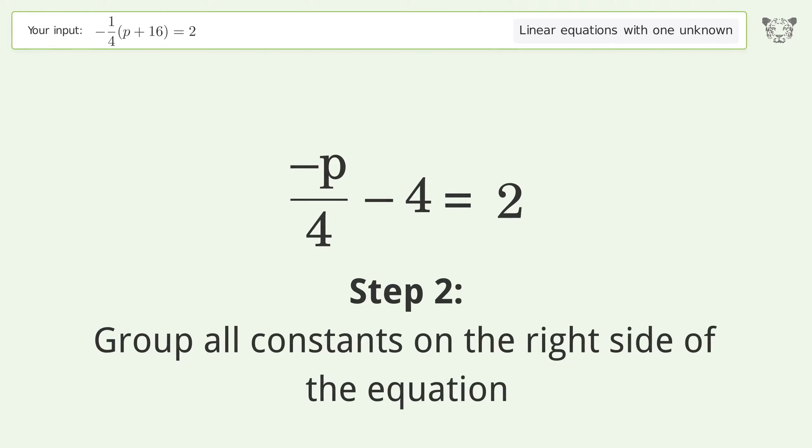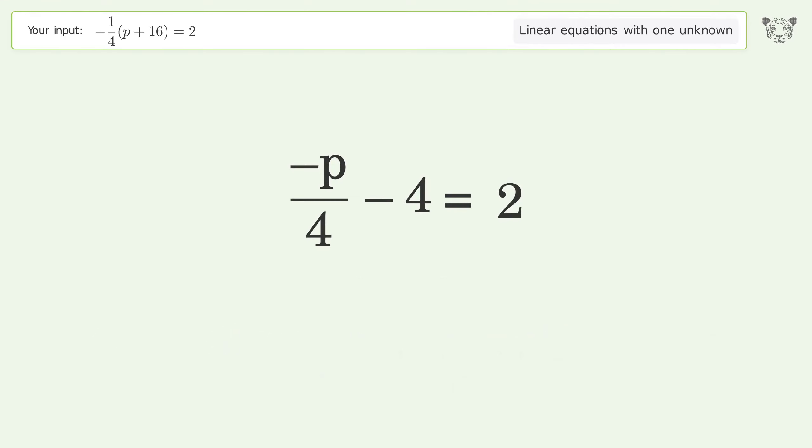Group all constants on the right side of the equation. Add 4 to both sides. Simplify the arithmetic.